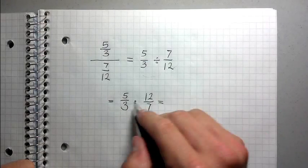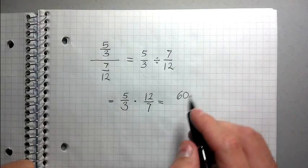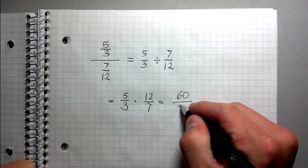So when I do this, I get five times 12 is 60 because I'm multiplying straight across. And then three times seven is 21.